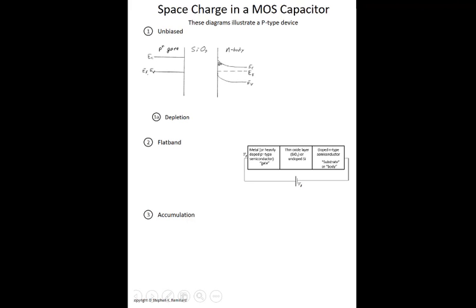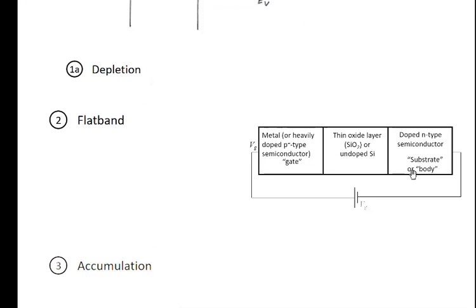I drew a MOS capacitor. This one happens to have an N-body, therefore a P-type gate. They're always opposite. One type is the body, the substrate. The other type is the gate, the thin film coating that's got the dielectric in between them. The battery is attached across that. Φg is the voltage at the gate, and we typically take the negative terminal of a battery just to be zero.